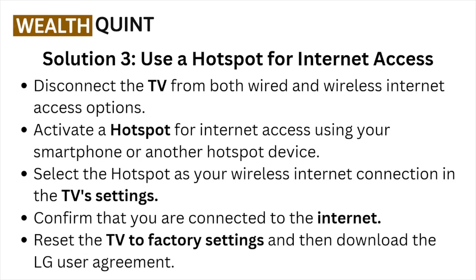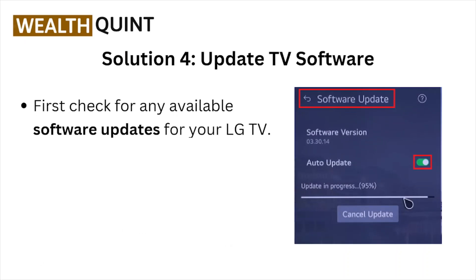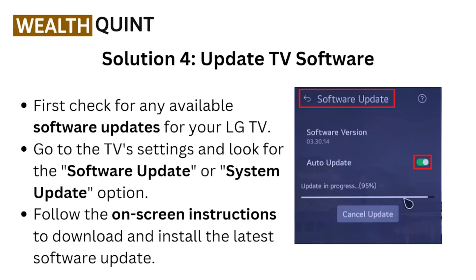Solution number three is use a hotspot for internet access. Disconnect the TV from both wired and wireless internet. Activate a hotspot using your smartphone or another hotspot device, then select the hotspot as your wireless internet connection in the TV settings. Confirm you're connected to the internet, reset the TV to factory settings, and then download the LG user agreement.